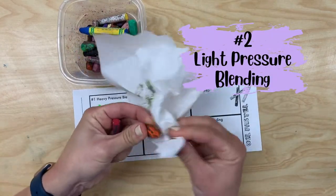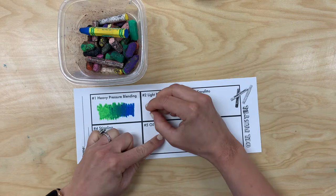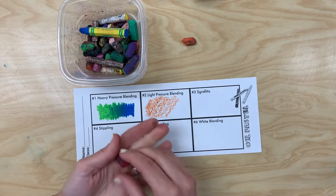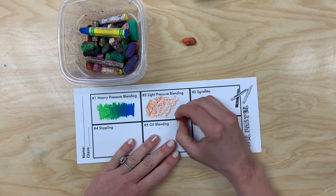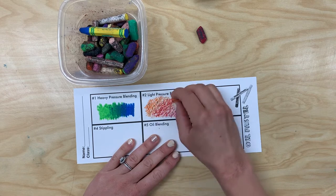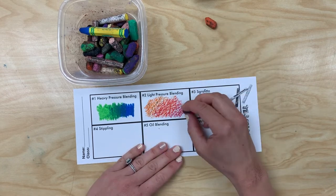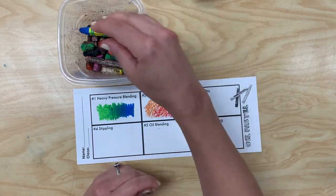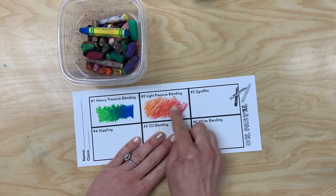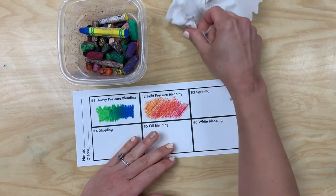Technique number two is light pressure blending. For this, you are barely going to press down on the oil pastel with your two colors, making them overlap in the middle. This will create a rougher texture than heavy pressure blending. If you would like, you could also use your finger to do a little bit of smearing that will soften that texture, which makes it look almost steamy or foggy.